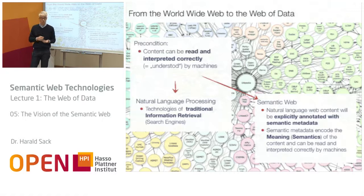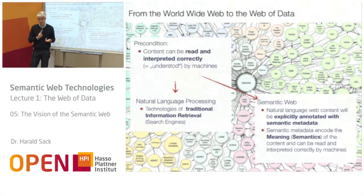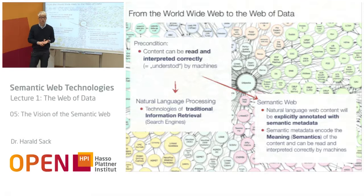On the other hand, you could beforehand explicitly state what the information given really means. And this is the way that the semantic web goes. It means the information content of the natural language on the web will be explicitly annotated with semantic metadata. This semantic metadata encodes the meaning — the semantics — of the content, and it can be read and interpreted correctly by machines.